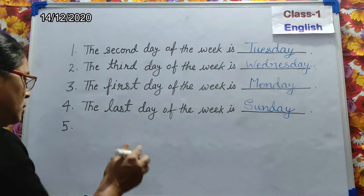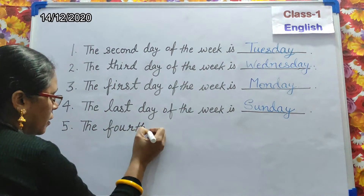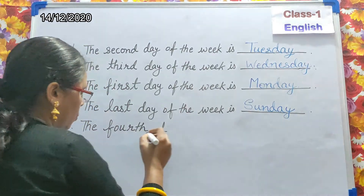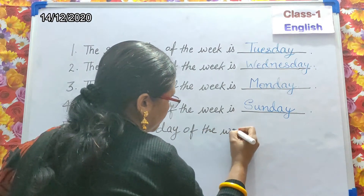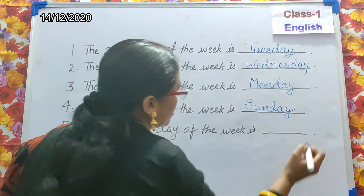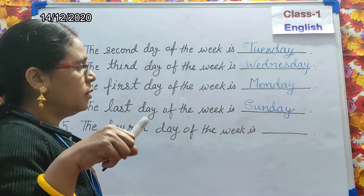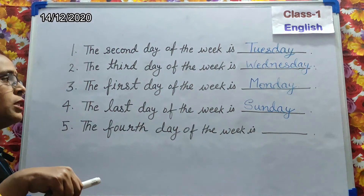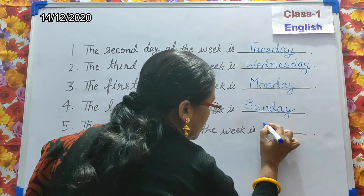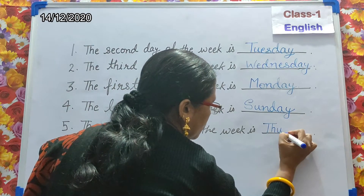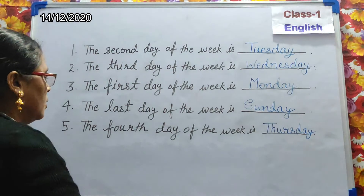The fourth day of the week is? The fourth — F-O-U-R-T-H — day of the week. Monday is the first day, Tuesday is the second day, Wednesday is the third day, and the fourth day is Thursday. All of you write Thursday — T-H-U-R-S-D-A-Y, Thursday.